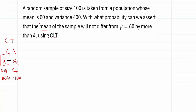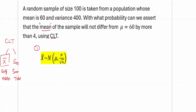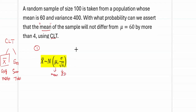Step one: fix the formula for your CLT. We need the formula for X̄. The formula is that X̄ follows a normal distribution — the first parameter is the mean and the second is the standard deviation. So the formula for X̄ is fixed.